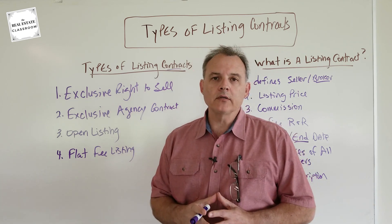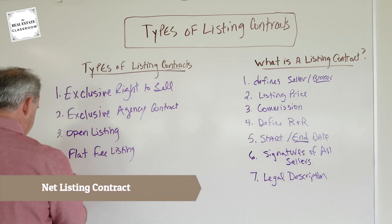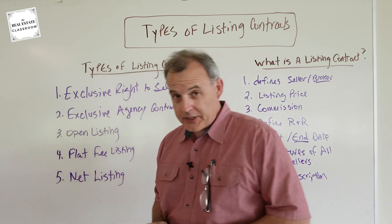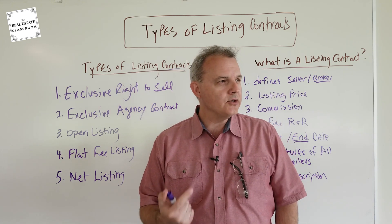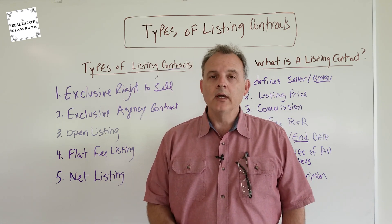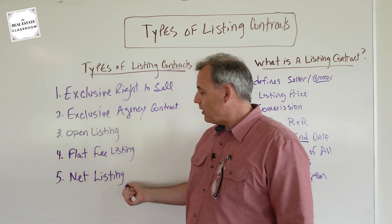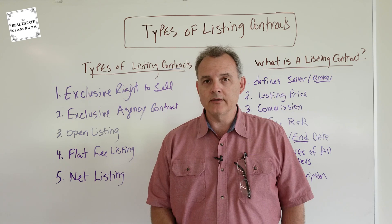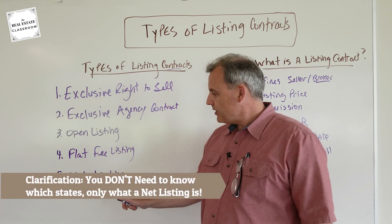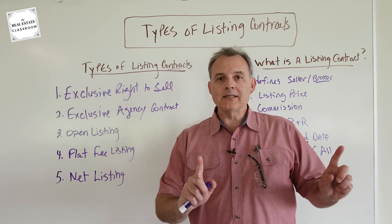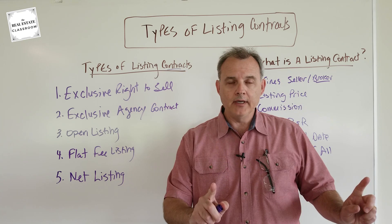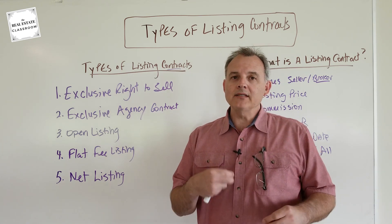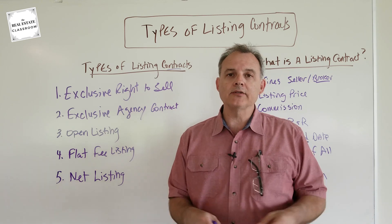The fifth and final type is what's called a net listing. Keep in mind that a net listing is not legal in every state — as of around 2017, only about 17 out of 50 states allowed net listings. Your state may or may not allow them, but you need to know them for the real estate licensing exam. A net listing basically says the seller wants a net amount from the sale of their property, and anything above and beyond that net amount is the commission for the real estate broker. These amounts must be predetermined at the time the listing contract is signed.